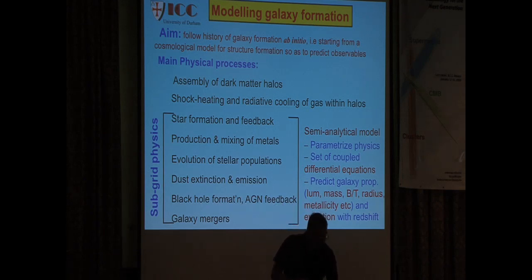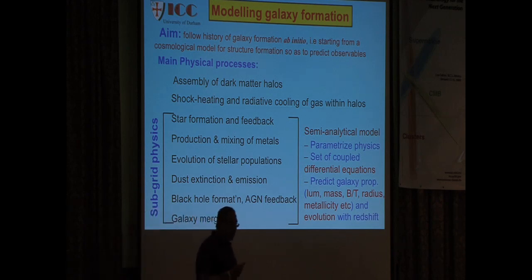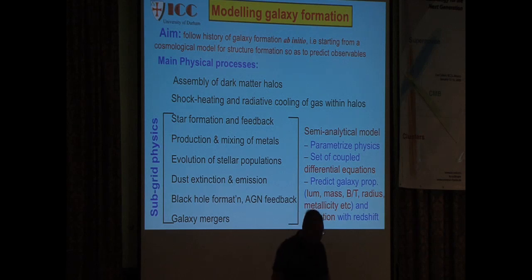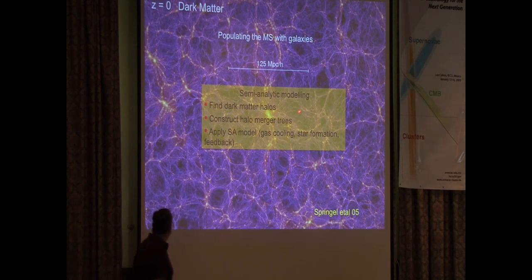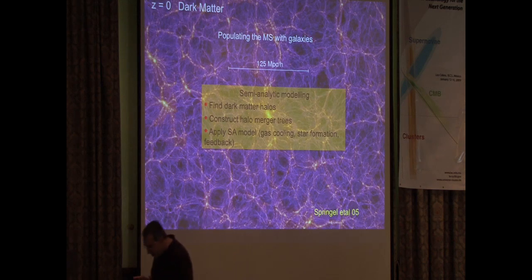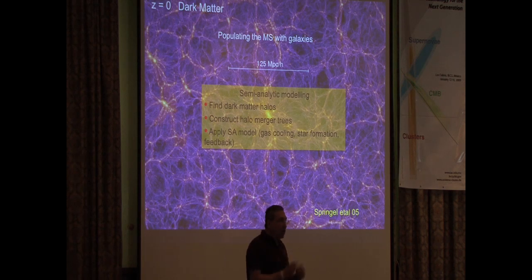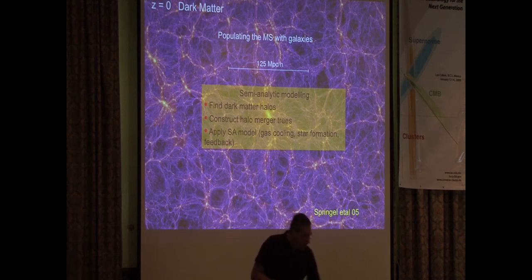In the Millennium simulation, two semi-analytic models have been implemented and are publicly available — one from the MPA group and one from the ICC in Durham. You can go to the Millennium web page and download catalogs of galaxies whose properties have been calculated in this way. You go to the simulation, find the dark matter halos, construct halo merger trees from the simulation, follow the formation of each halo, and along each branch calculate how much gas would cool, how many stars form, and so on.